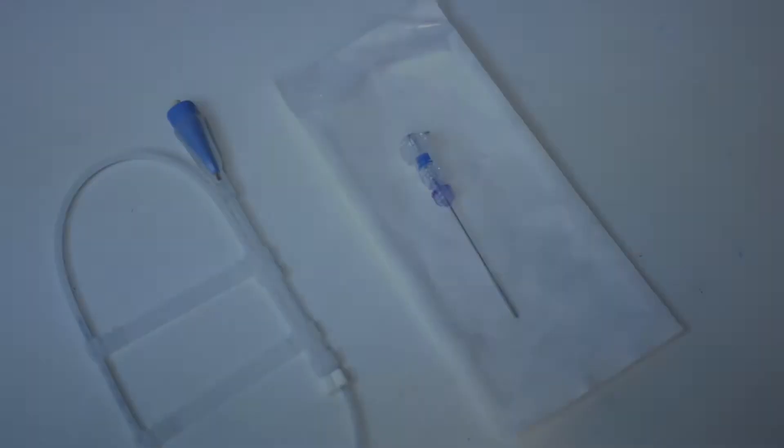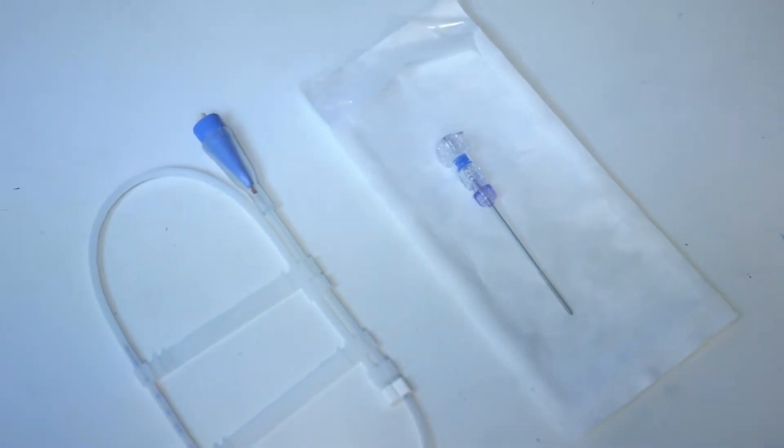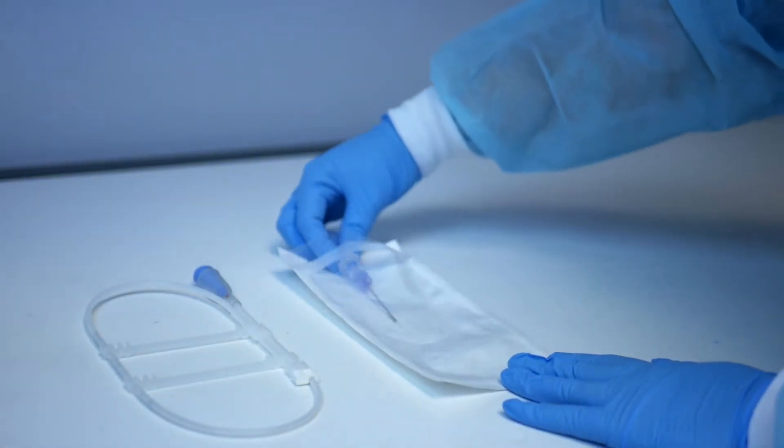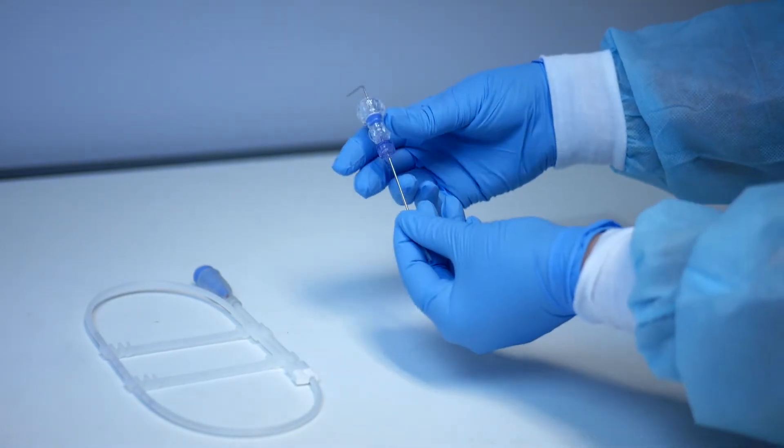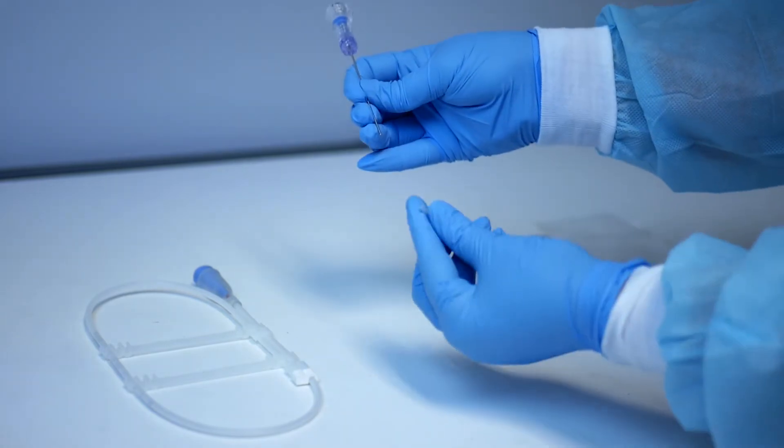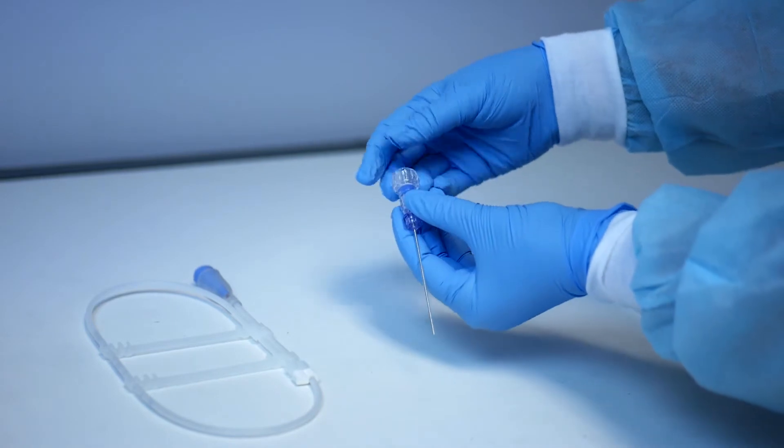Ensure you have both the Hemetix Q-Flow 500 Perfusion Probe and the Probe Durapiercer and Introducer Kit. Remove the Probe Durapiercer and Introducer from its packaging. Remove the silicone tubing at the end of the Durapiercer. Remove the Durapiercer from the assembly and set it aside to be used later on.